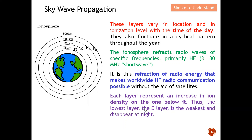Each layer represents an increase in ion density over the one below it. The lowest layer, the D layer, is the weakest and disappears at night. At night, with the help of the E, F1, and F2 layers, signals are reflected from the ionosphere and come back to the earth. Let's take a closer look at this to understand it better.